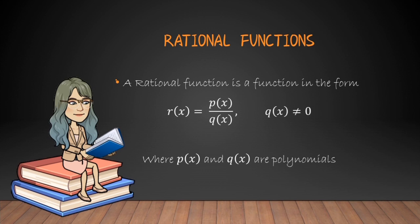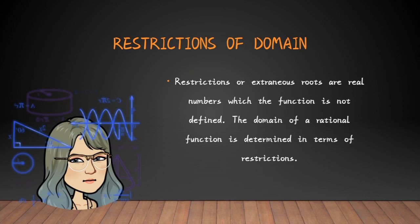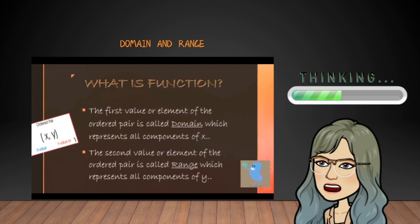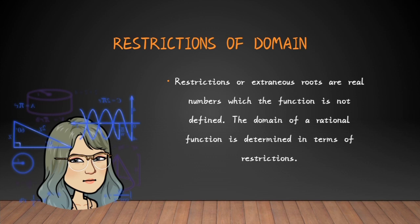That's why in a rational function, Q of x should not be equal to 0. In this case, we have to identify the restrictions in rational function. So before we proceed, let's have these restrictions of domain. When we say restrictions of domain or extraneous roots, these are real numbers for which the function is not defined. The domain of a rational function is determined in terms of restrictions. The word domain was mentioned in our definition, so let's go back to our previous lesson and define what domain is. The first value or element of an ordered pair is what we call the domain, which represents all the components of x.